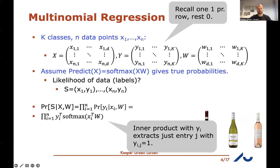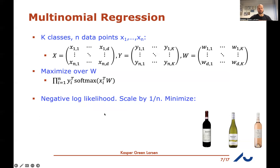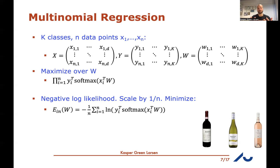The probability of seeing all training data is the product of these terms over all training examples, and we maximize this over W. To convert to minimization, we take the negative log, then scale by 1/n to match our usual loss function form. This gives the average over n training examples of minus log of the inner product between y_i and the softmax vector.